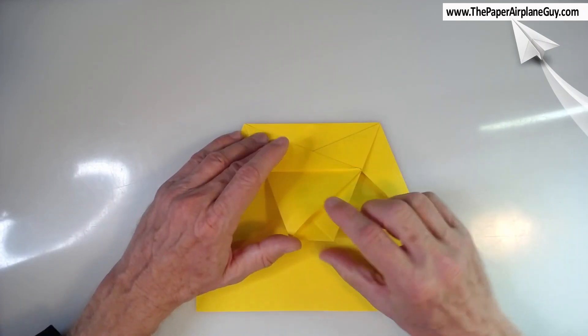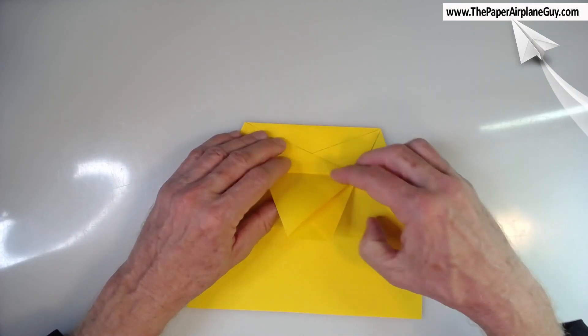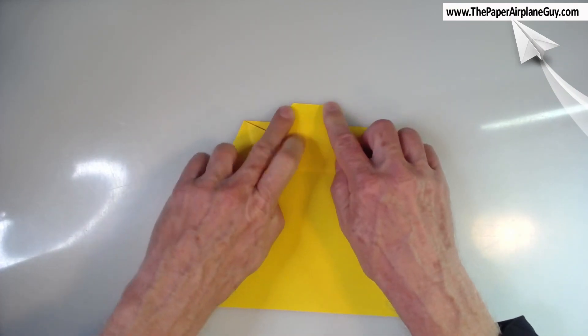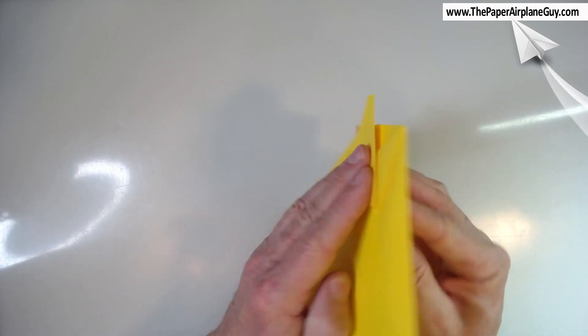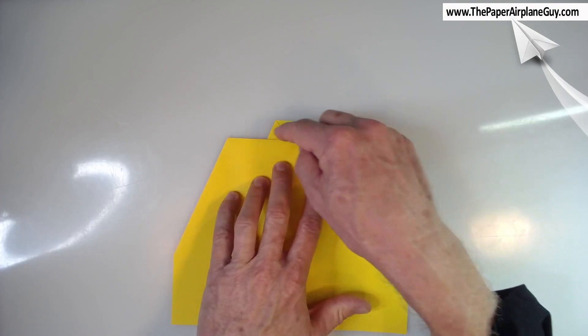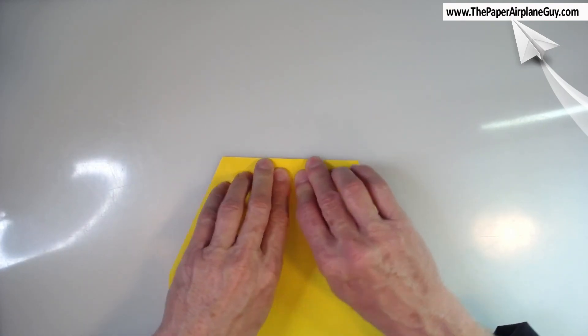Now we're going to lift up this edge right along this layer right here. This just goes straight up. No big deal. There's already a crease there. I'm going to flip it over to do the next step here.